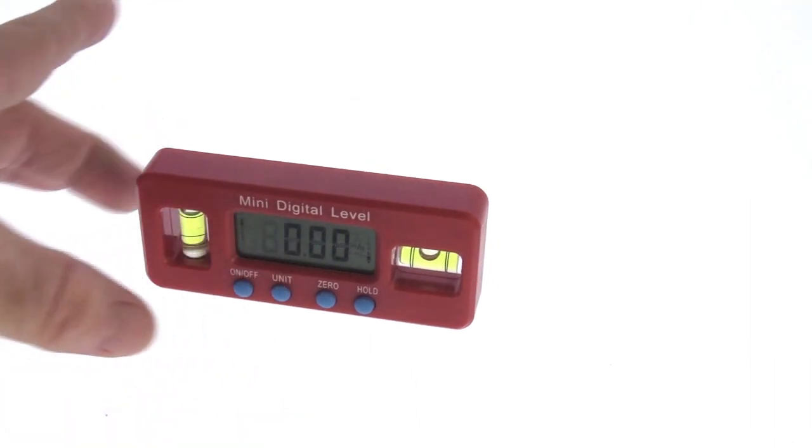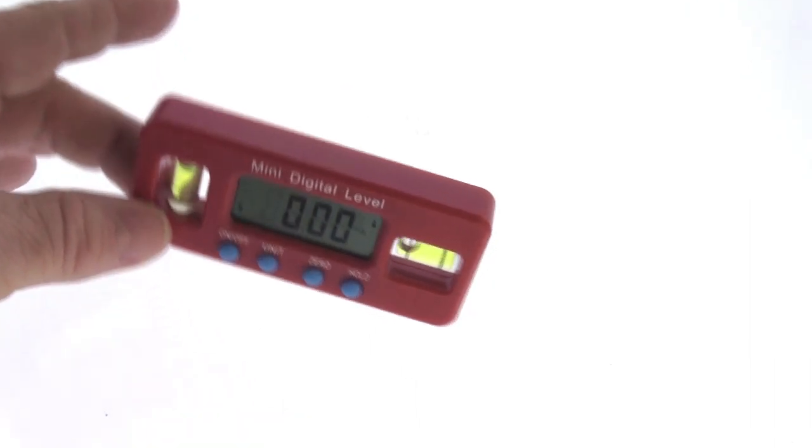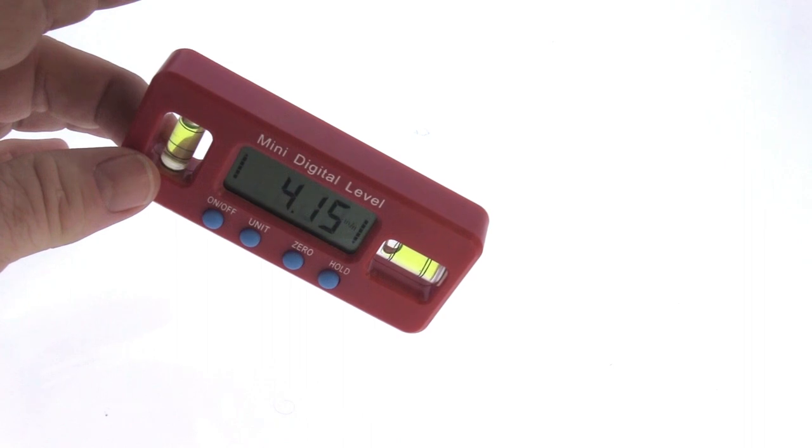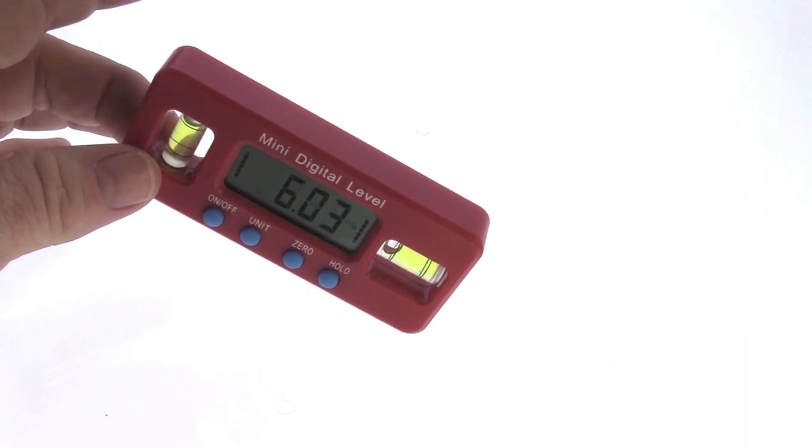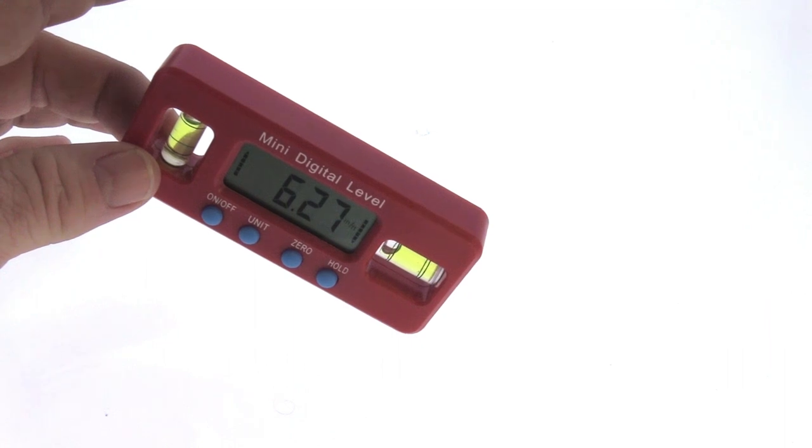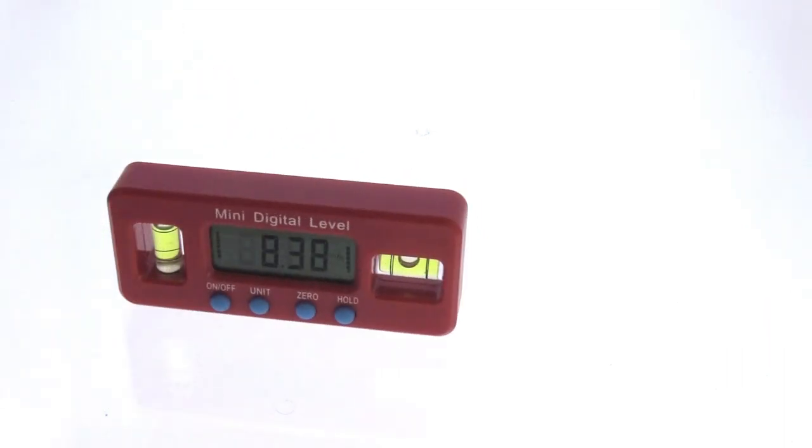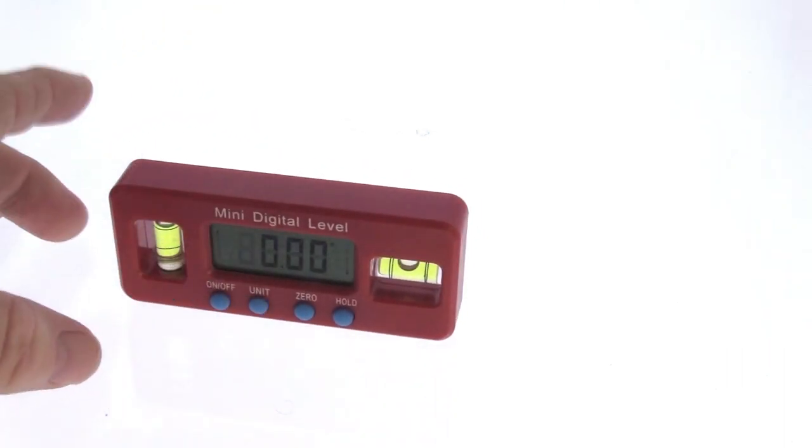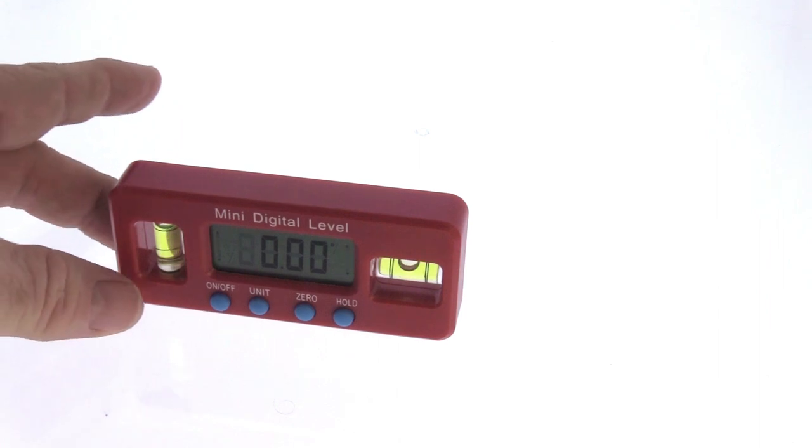Press the unit again and this gives you inches per foot. So at this angle, you'll have a 6.27 inch rise at one foot. So you hit it again and it takes you back to angle.